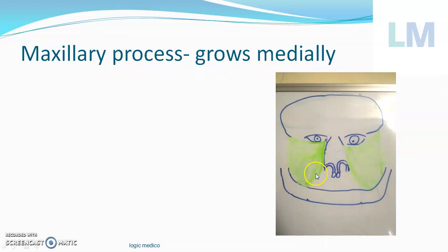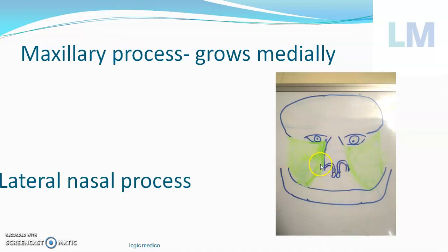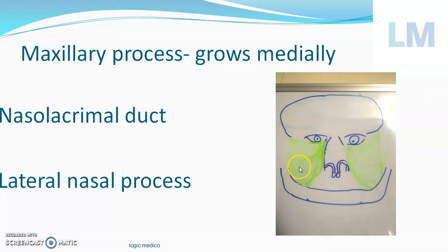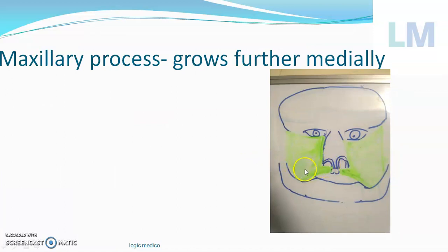The maxillary process grows medially and first unites with the lateral nasal process, which is on the outer aspect of the nose. When the maxillary process touches the lateral nasal process, a thin area of ectoderm rolls inside to form a solid cord of cells connecting the lacrimal sac with the inferior meatus of the nose. This is the nasolacrimal duct — that's why when we cry, the nose becomes stuffy, because tear fluid enters the nose.